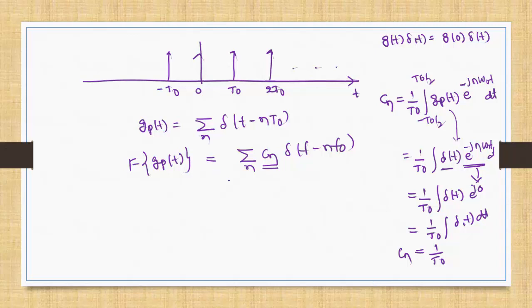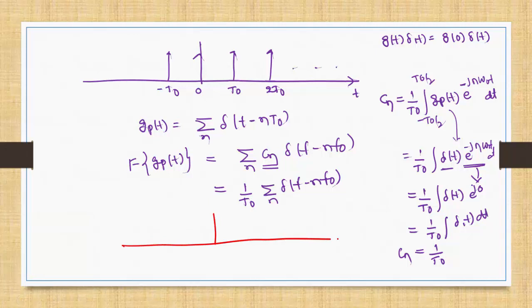Therefore the Fourier transform of the impulse train can be rewritten as (1/T0) * sigma delta(f - n*f0). Plotting this function, we get another impulse train in the frequency domain, where the amplitude of each impulse is 1/T0. The impulses occur at frequencies ..., -f0, 0, f0, 2f0, ..., where f0 = 1/T0.